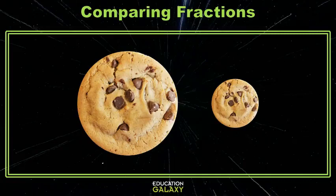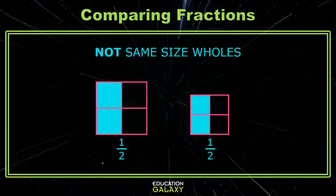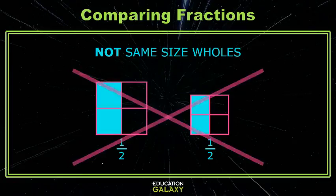When we talk about comparing fractions, we need the original items we're comparing to be the same size. So when you have two grids, or two cookies, two whatever, if they're not the same size, we can't compare fractions of them.